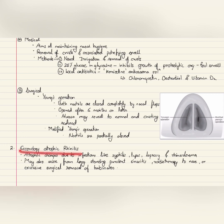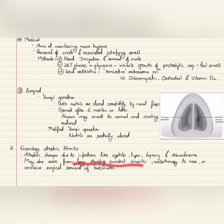Lastly, secondary atrophic rhinitis: specific infections such as syphilis, lupus, leprosy, and rhinoscleroma may cause destruction of the nasal structures leading to atrophic rhinitis. Atrophic rhinitis can also arise from long-standing purulent sinusitis, radiotherapy to the nose, or excessive surgical removal of turbinates.